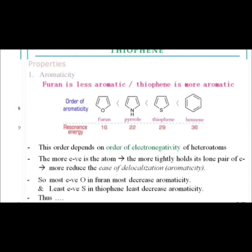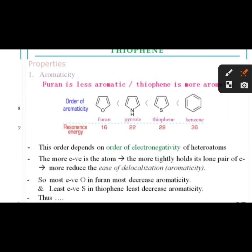Furan is less aromatic than thiophene. The order of aromaticity is: furan is less aromatic than pyrrole, pyrrole is less aromatic than thiophene, and thiophene is less aromatic than benzene. The resonance energy of furan is 16 kcal/mol, pyrrole is 22, thiophene is 29, and benzene is 36.